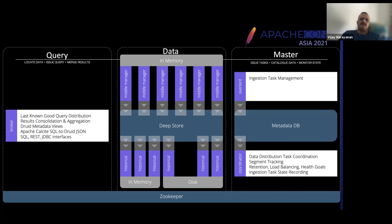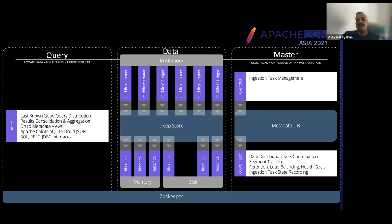This architecture is highly optimized, and the data format in which data is written in Druid is highly optimized for query execution — one of the primary reasons why Druid is so high-performance. The key thing to note is that data once written into Druid is immutable. There is no updating of data. Although some data can be deleted, that process is not as simple as running a delete query in SQL. So updating data is not supported in Druid.